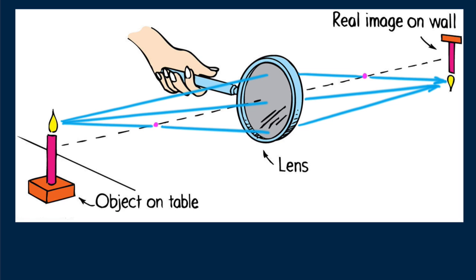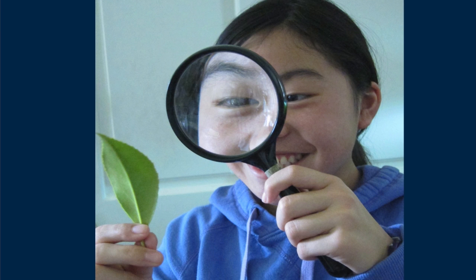The simplest use of a converging lens is a magnifying glass. Sydney uses a magnifying glass to examine the structure of a leaf. The leaf is inside the focal length of the magnifying glass, so she sees an enlarged upright image. She views the leaf through a wider angle when she views it with a magnifying glass.